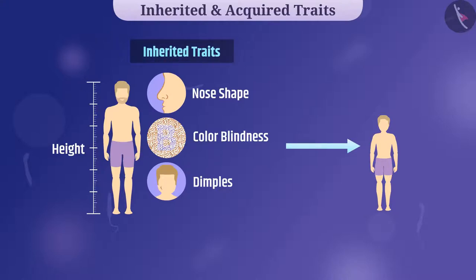Inherited traits are stored in the DNA of gametes. Therefore, these are transmitted from one generation to the next which takes the organisms to evolution.